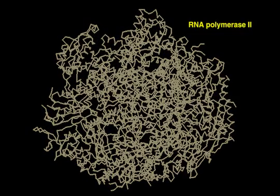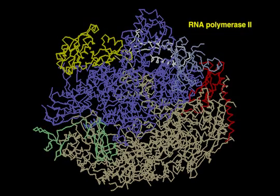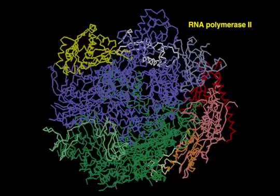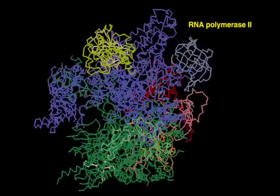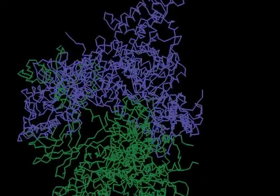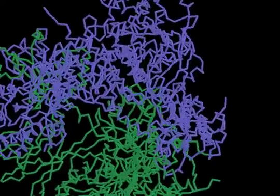Eukaryotic RNA polymerase II transcribes all messenger RNA molecules in the cell. It is a huge complex of 10 different protein subunits. The active site of the enzyme lies at the interface between the two largest subunits.